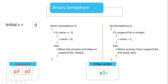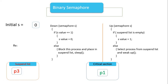If P1 is in the critical section, the value is 0. You can execute this code. Check if the suspend list is empty — no, the suspend list is not empty; P2 or P3 are in the suspend list. If the suspend list is empty, then you can execute the code.